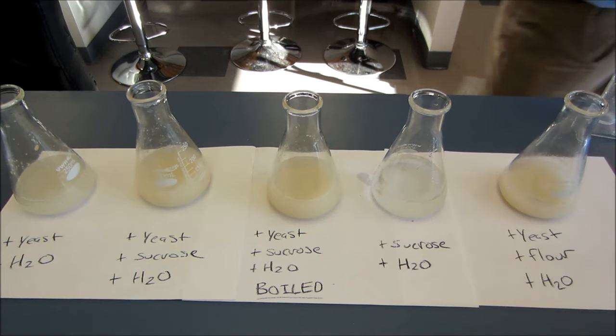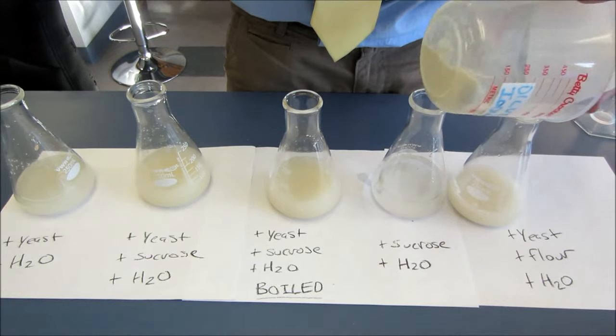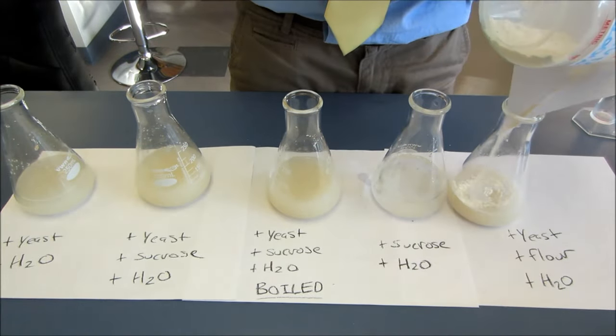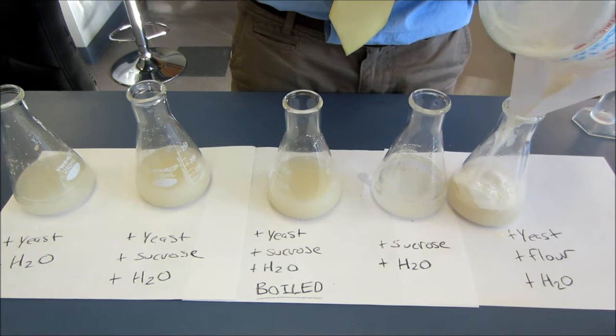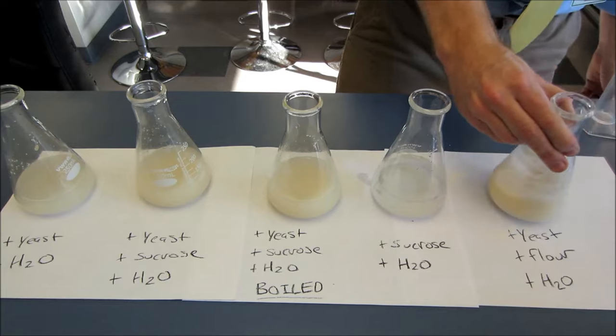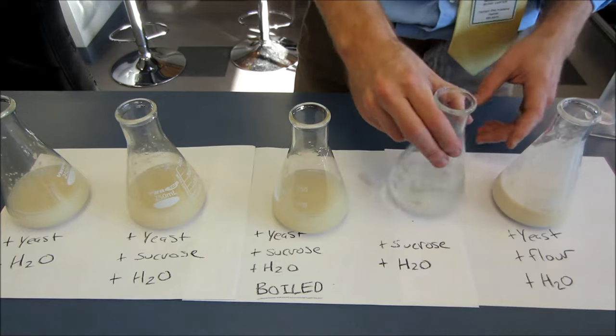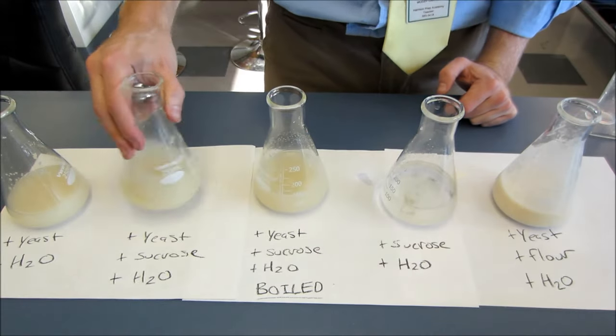Finally I have this flask that I'm going to get rid of the yeast. I'm just going to have sugar and water in it together. This flask all the way on the right, flask number five, that's going to be my yeast, flour and water. Instead of sugar we're going to try flour. Flour is a more complex carbohydrate. It takes a little bit longer to break down. It's made of more than just fructose and glucose.